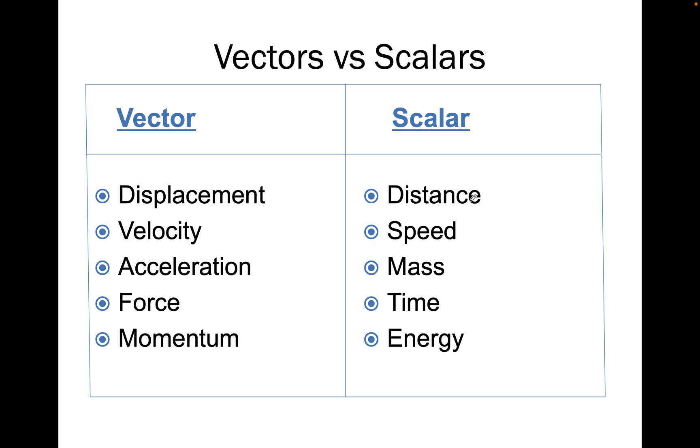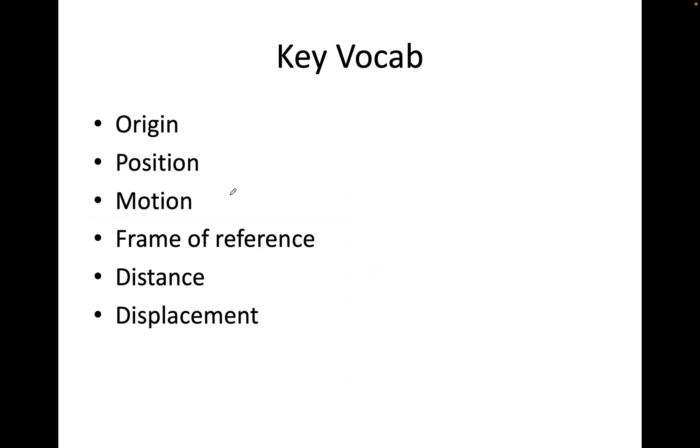So distance means I have 5 meters. I travel 5 meters only. Displacement, I have to have a direction. Where did I go for those 5 meters? That's vectors and scalars. There are some key vocabulary that we used. We had origin, position, motion, frame of reference, distance and displacement. I've kind of mentioned these two already now. So let's get on with the other main words.